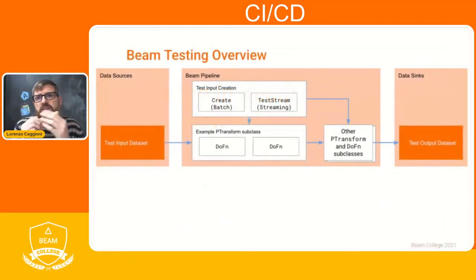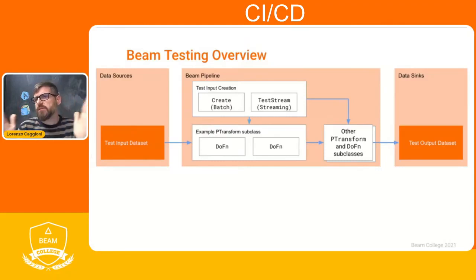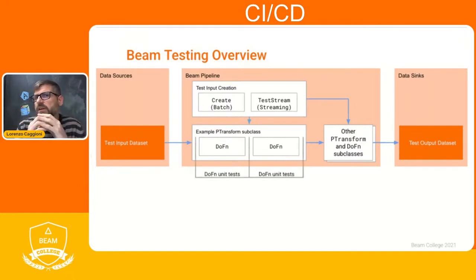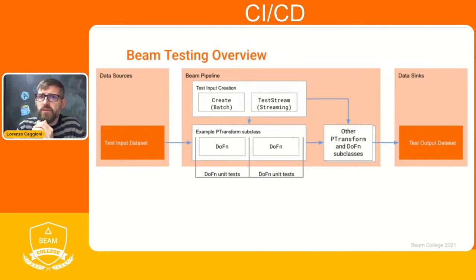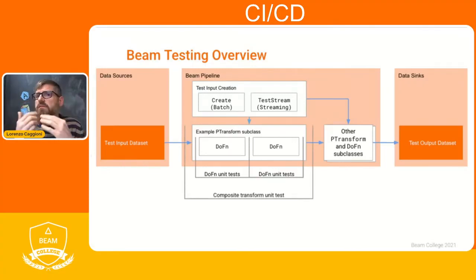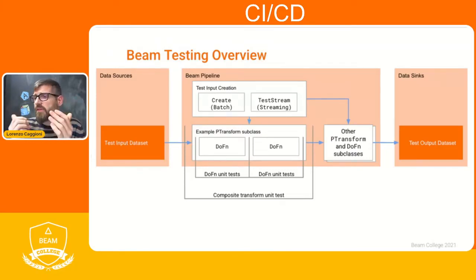Testing in Beam is summed up well by this diagram, and you can read it from the center outward. All pipelines revolve around transforms, and the lowest level we typically deal with within Beam is the DoFunction. We want to validate their behavior with unit tests. We can then combine several functions to create a composite transform, and we also want to do unit tests for those transforms.